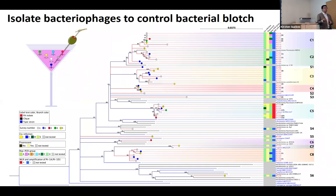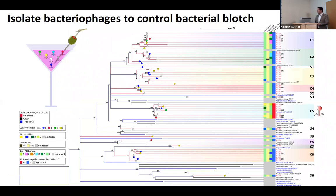With that information, we can use it to target specific strains and control disease. For example, we can isolate bacteriophages to control specific strains, because phages are very specific in controlling bacteria. However, if we isolate phages to control only clade 5 or a specific strain, it's not going to fully manage the disease since there is more than one strain. Instead, we can create a cocktail, and depending on the strain identified, use a specific phage.